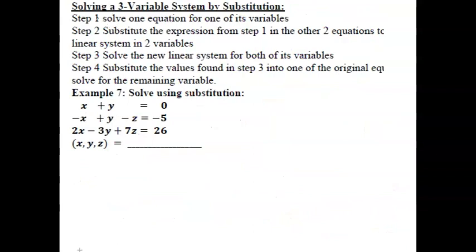The next page covers solving a 3-variable system by substitution. Step 1: solve one equation for one of its variables. Step 2: substitute the expression from step 1 into the other two equations to get a linear system of two variables. Step 3: solve the new linear system for both of its variables. Step 4: substitute the values found in step 3 into one of the original equations to solve for the remaining variable.